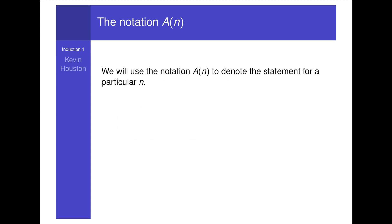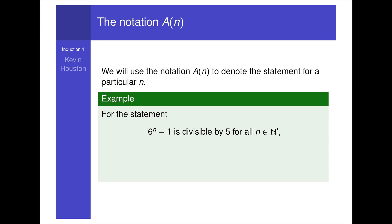We will use the notation a_n to denote the statement for a particular n. For the statement '6 to the power n minus 1 is divisible by 5', a_3 is just: 6 to the power 3 minus 1 is divisible by 5.